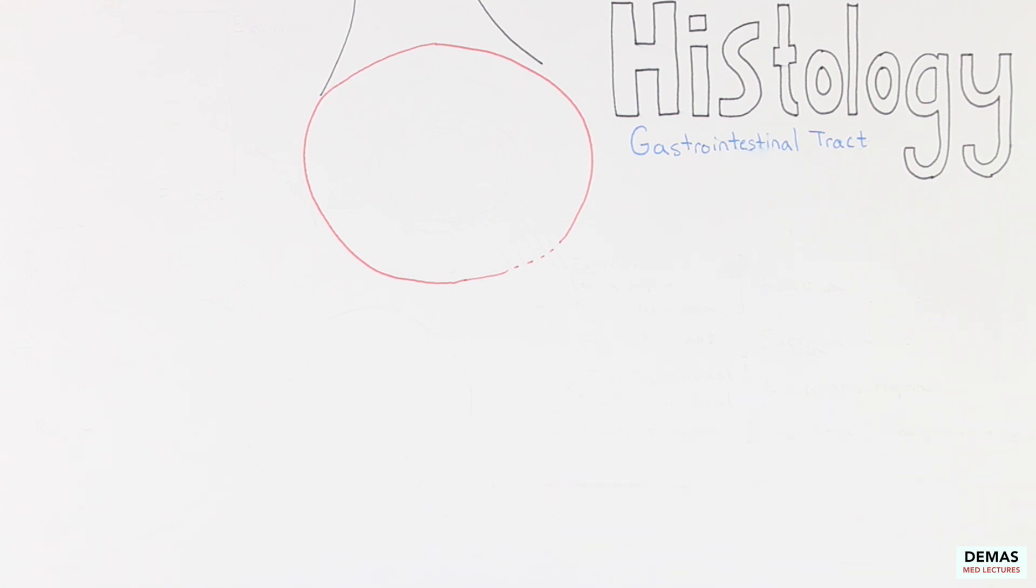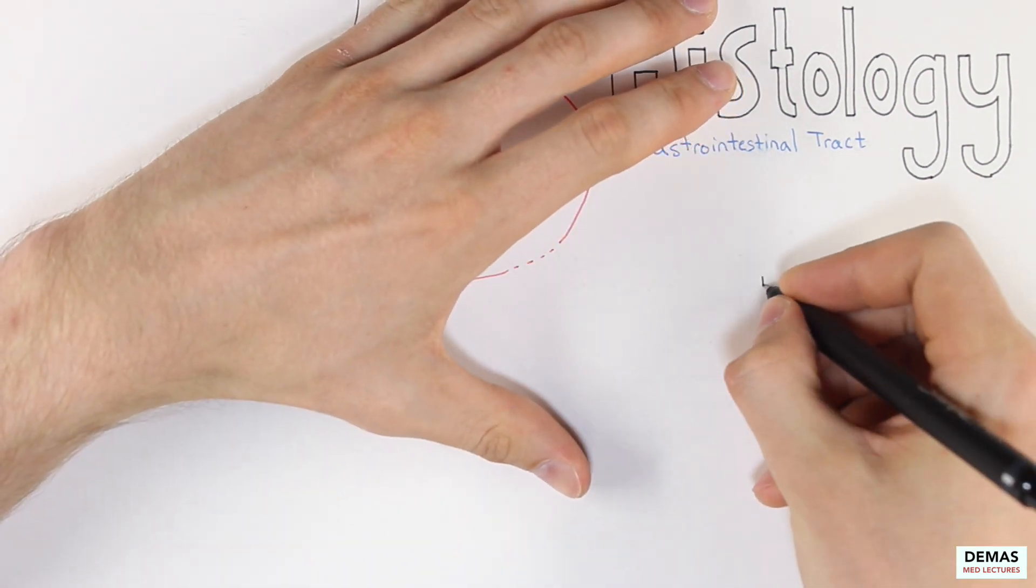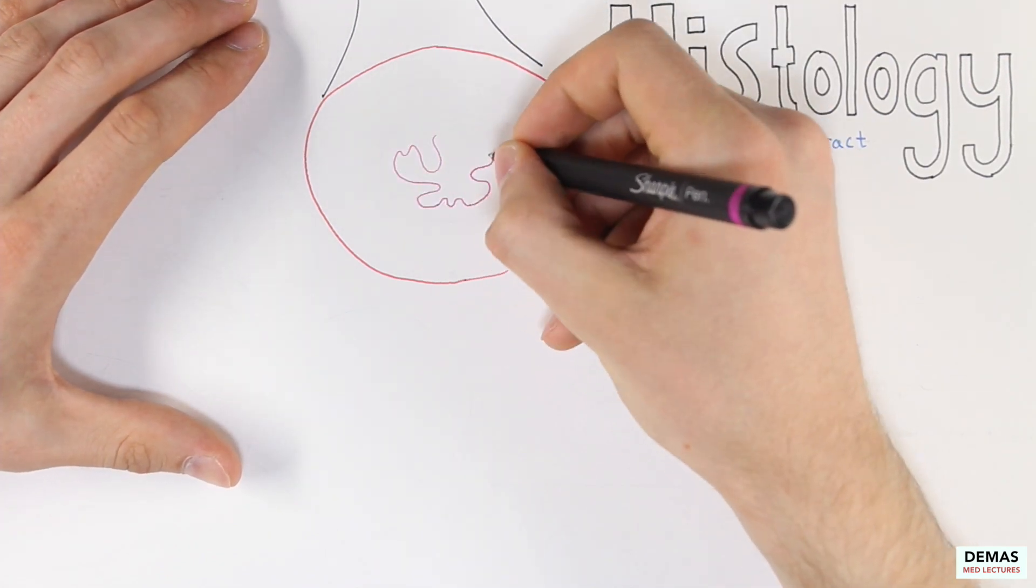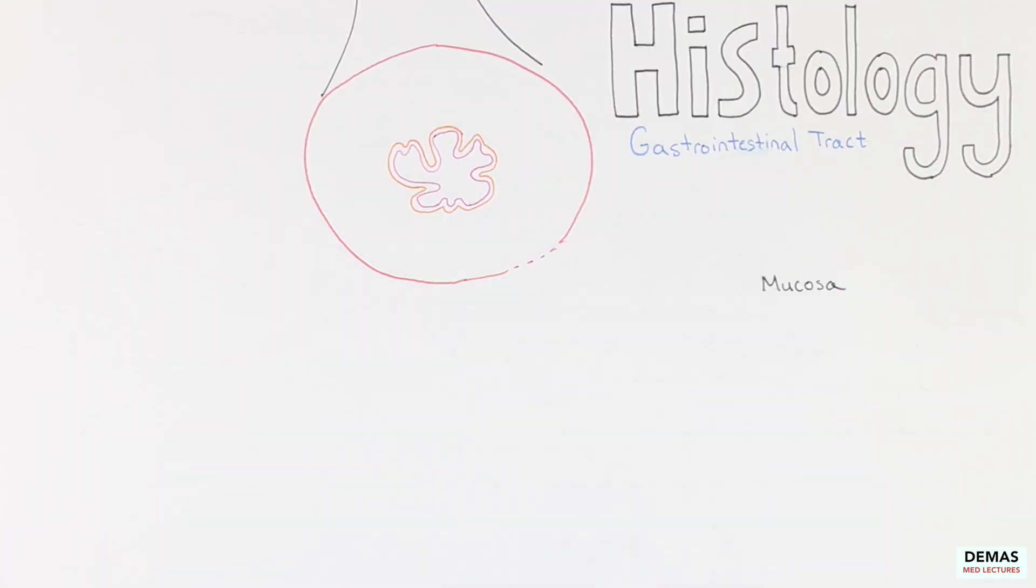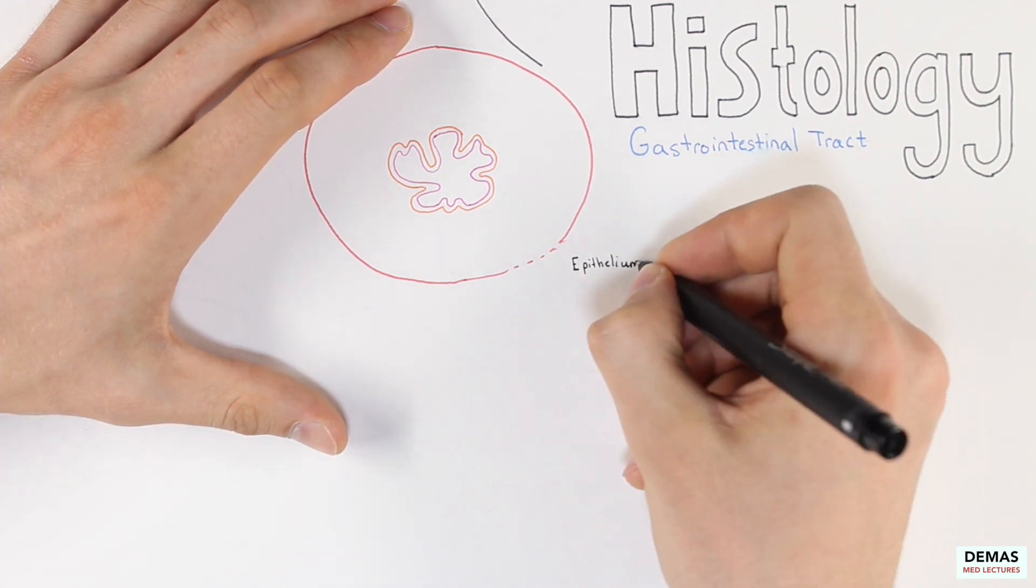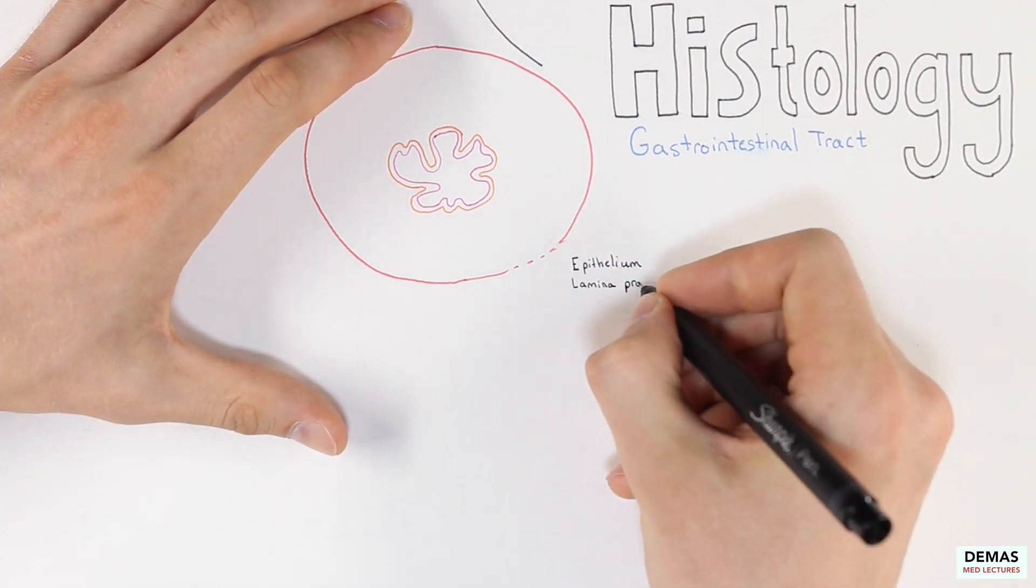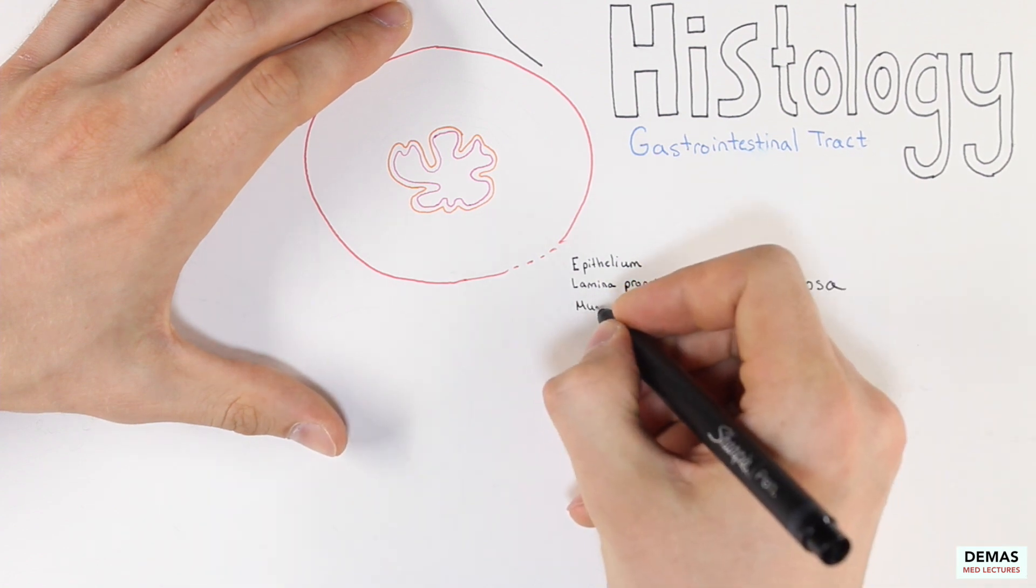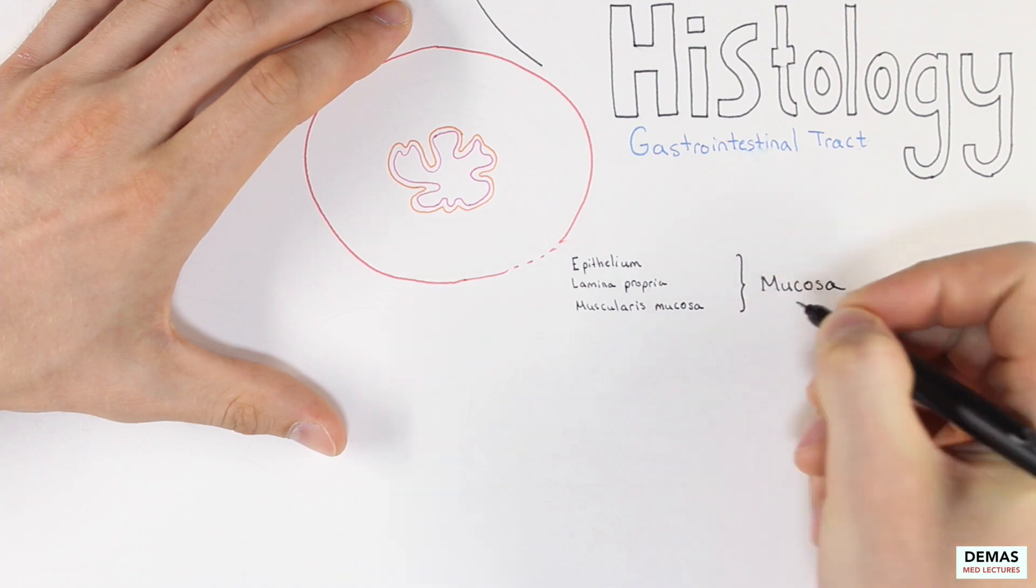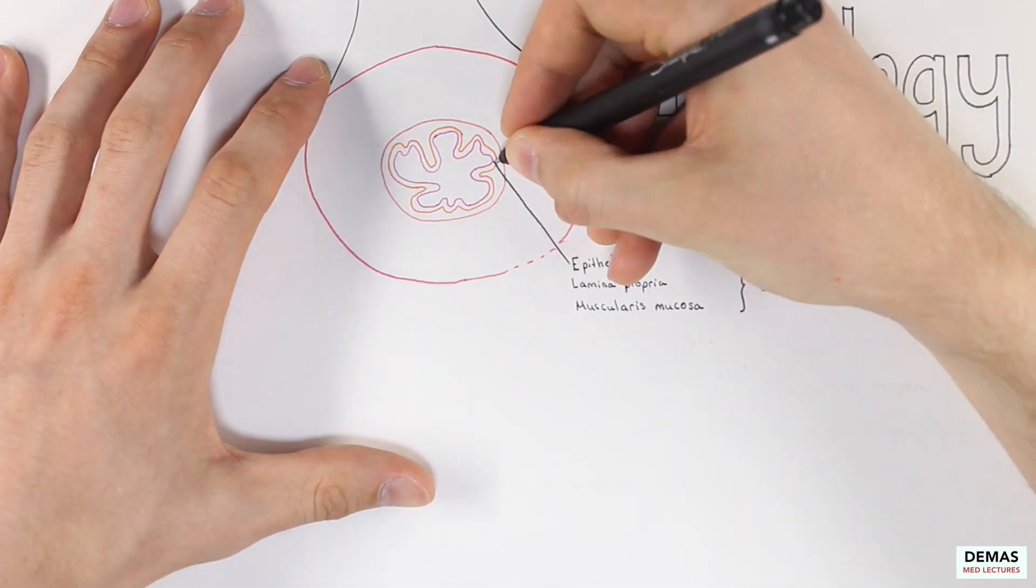Let's look at a section of the esophagus and use it as a model for the rest of the digestive tract. The first most inner layer of the digestive tract is the mucosa. The mucosa can be subdivided into three additional layers, which include the innermost epithelial layer, the middle thin supporting connective tissue layer known as the lamina propria, and a thin layer of smooth muscle on the outermost part of the mucosa, called the muscularis mucosa. Let's go ahead and label those three layers now.